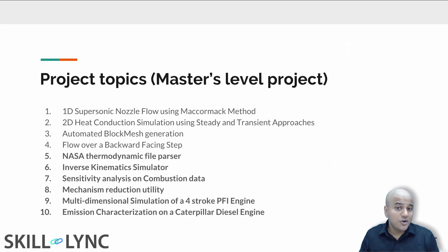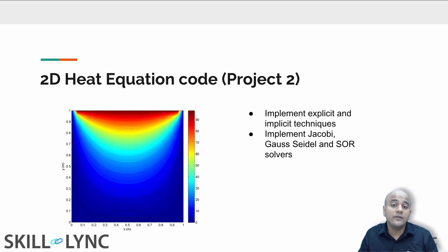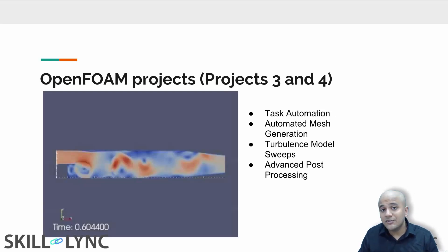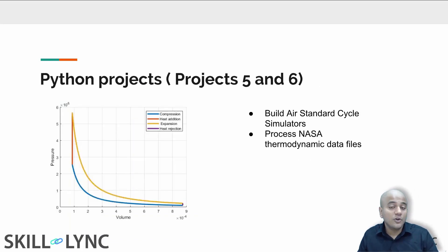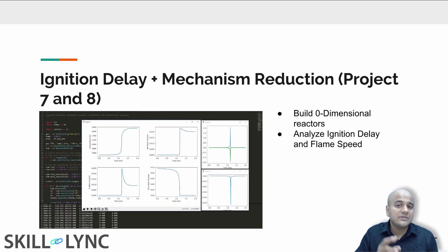In total you are going to be doing 10 projects. The first project is a 1D supersonic nozzle flow simulation using the McCormack method, writing code in MATLAB — and even if you don't know MATLAB, we teach you from the basics. The second project is solving a 2D heat conduction PDE with both steady-state and transient approaches, incorporating standard linear solvers. Projects three and four are in OpenFOAM, dealing with automatic mesh generation and turbulence model sweeps. Projects five and six are in Python, where you build cycle simulators, process NASA thermodynamic data files, and practice task automation and data analysis.